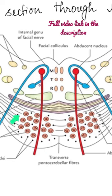The pontine nuclei are scattered among the longitudinal and the transverse fibers. They form an important part of the corticopontocerebellar pathway, which connects the cerebral cortex of one side to the cerebellar hemisphere of the opposite side.